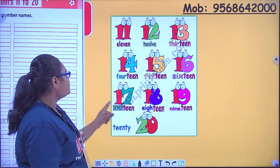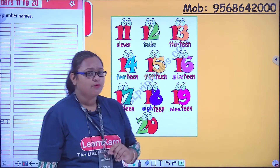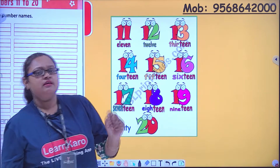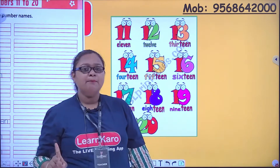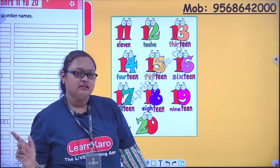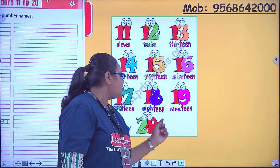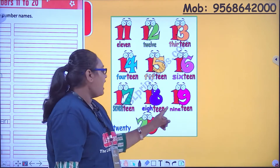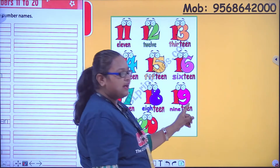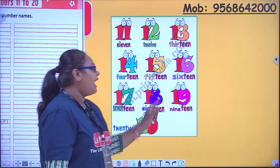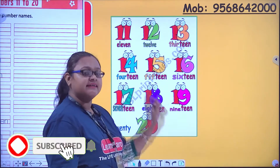Next comes 17: S-E-V-E-N-T-E-E-N. 7 ki spelling aap sabko yaad hai ki nahi? S-E-V-E-N — aur usme humein kya add kar dena hai? 10, yani T-E-E-N. So 17. Then 18: E-I-G-H-T-E-E-N. 18. Then 19 — mam ne galat bol diya, sahi kya hai? N-I-N-E-T-E-E-N. 19.